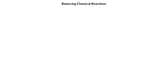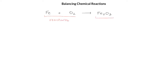Chemical reactions are represented as equations that show the substances undergoing a physical or chemical change. This is the reaction of iron and oxygen gas to produce iron oxide. The substances on the left side of the arrow are called reactants, and those on the right side are called products, and the reactants and products are separated by an arrow.